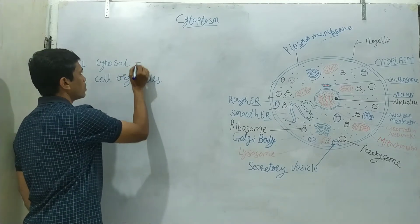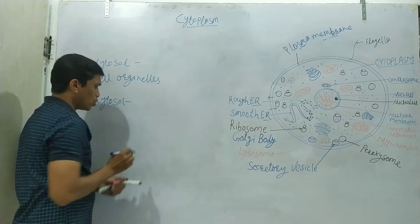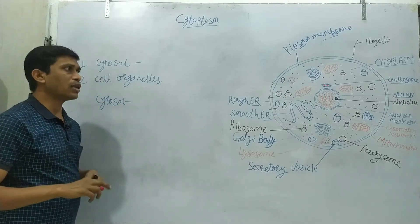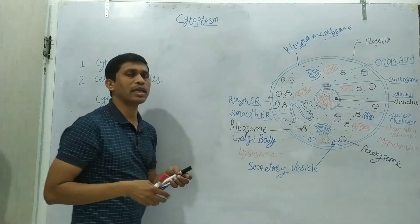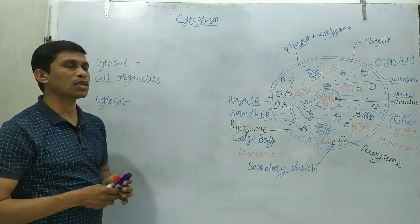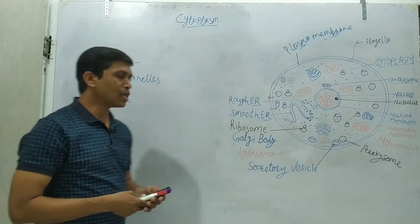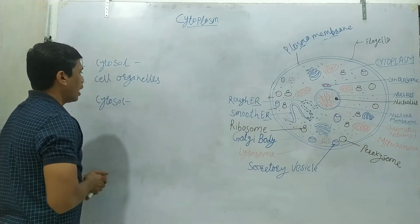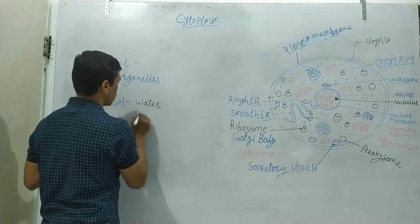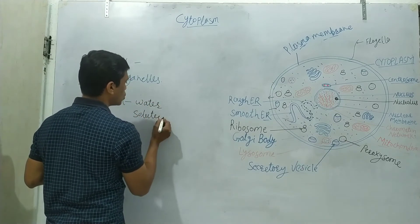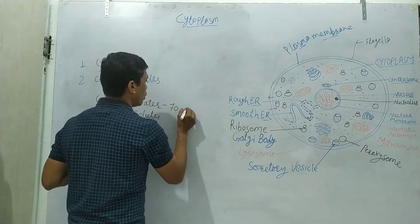Cytosol is basically the material in which these cell organelles are embedded, floating. This cytosol contains approximately water and solid materials, in which the water is approximately 70 to 90 percent.